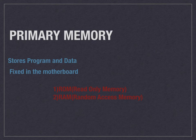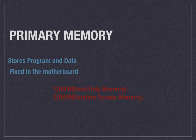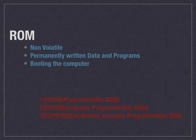Normally, primary memory is fixed in your motherboard. Primary memory can be classified into two types: ROM and RAM. ROM means read-only memory and RAM means random access memory.